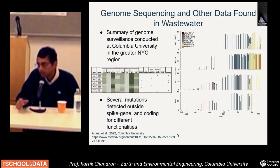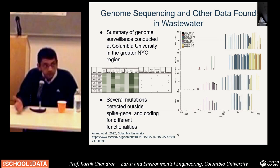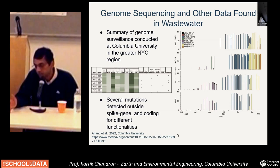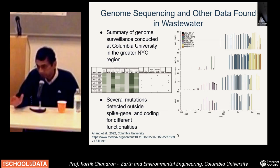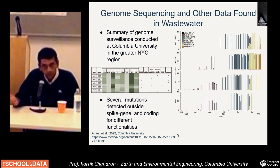In addition to tracking SARS-CoV-2, we've also tracked other targets in a targeted fashion. When we look at SARS-CoV-2, we go after a specific target. Responding to what the needs have been, we've looked at monkeypox, influenza A and B, polio, and RSV as well. We can keep adding to the targets one by one as concerns arise.